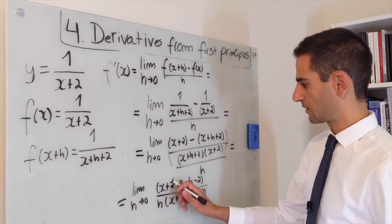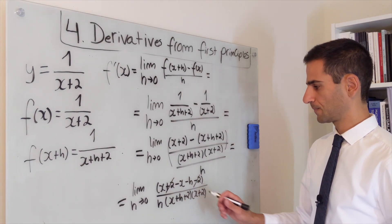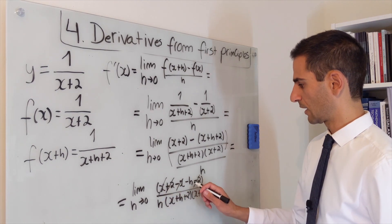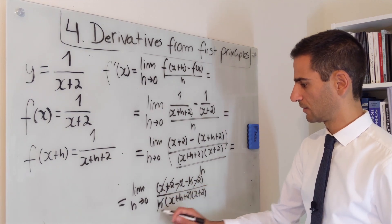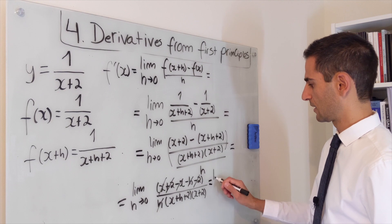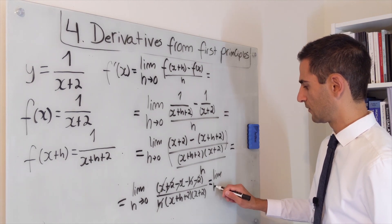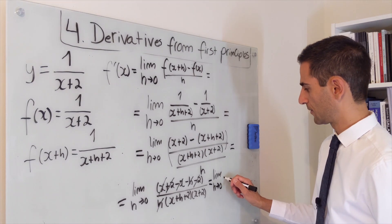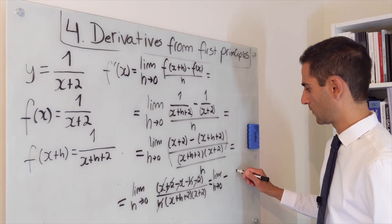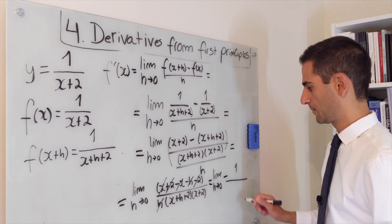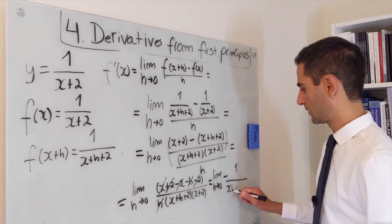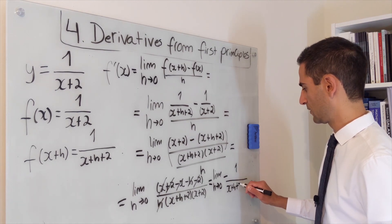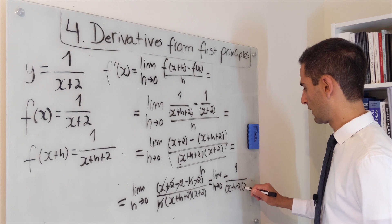It also means that we can start cutting out terms. And we can also cut this term. So this ends being the limit when h goes to 0 of minus 1 over x plus h plus 2 times x plus 2.